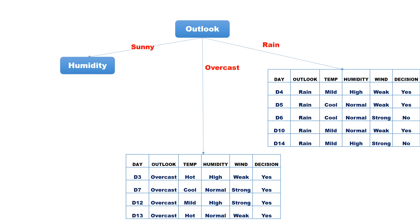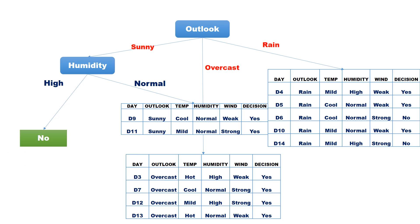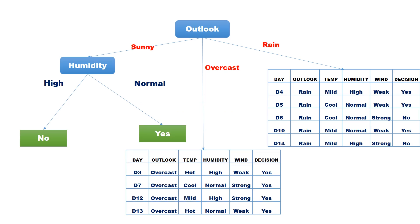Humidity has two values — high and normal — so there are two branches. Partition the records based on the value of humidity. All records with humidity equal to high have the same class label: no. Hence, we make it a leaf node with label no. Similarly, all records with humidity equal to normal have class label yes, so we make it a leaf node with label yes.